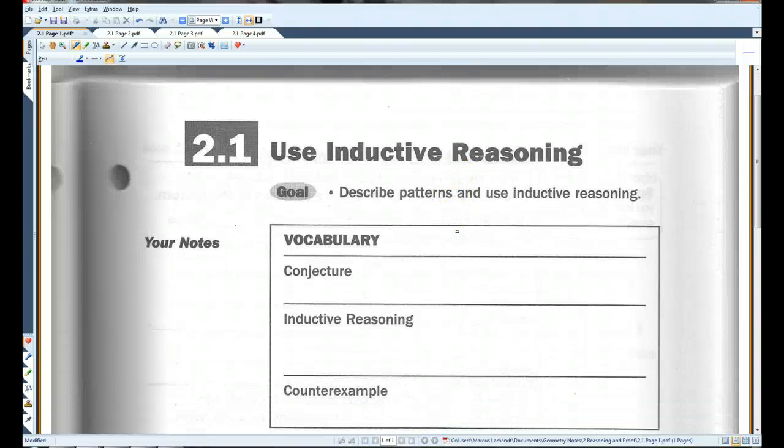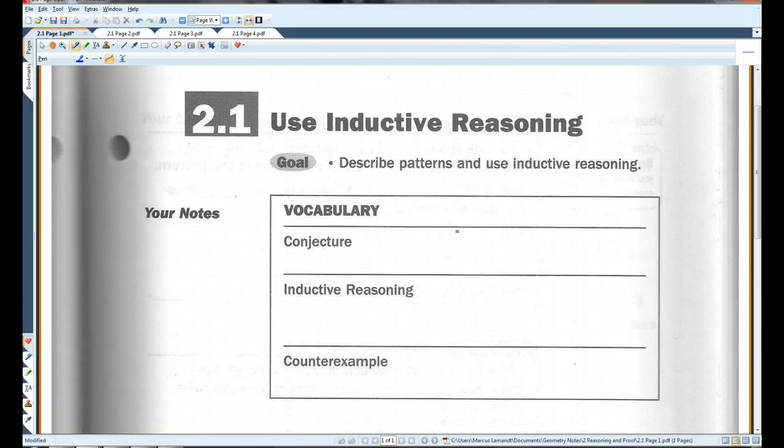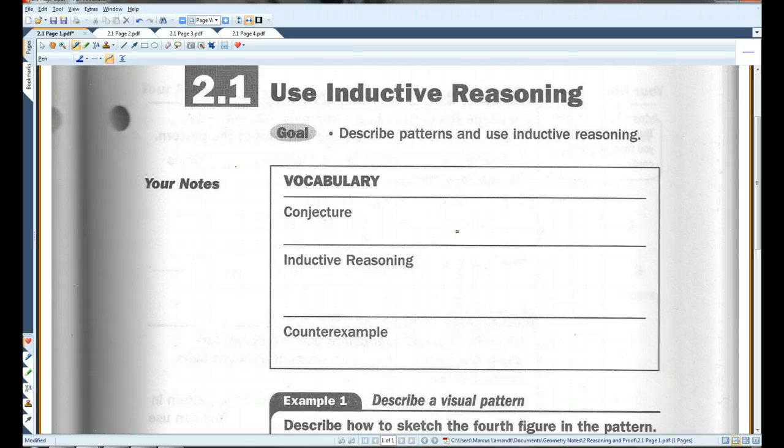All right, 2.1, use inductive reasoning. We're just going to go over a couple of vocab terms. A conjecture is an unproven statement that is based on observations.